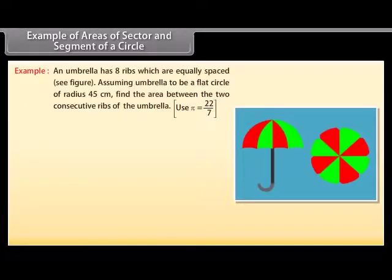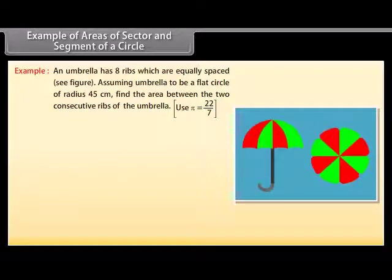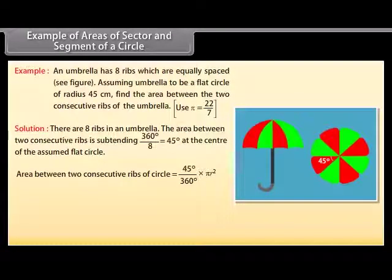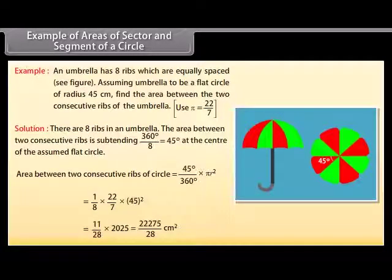Example: An umbrella has 8 ribs which are equally spaced. Assuming the umbrella to be a flat circle of radius 45 cm, find the area between two consecutive ribs. Use π = 22/7. There are 8 ribs, so each sector subtends 360°/8 = 45° at the center. Area between two consecutive ribs = 45°/360° × πR² = 22275/28 cm².